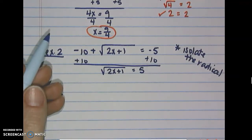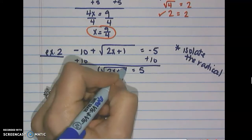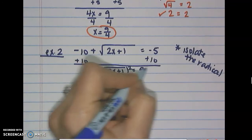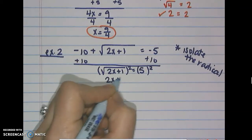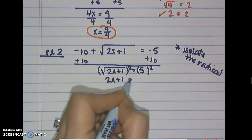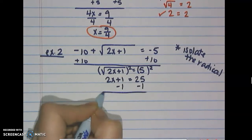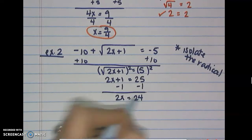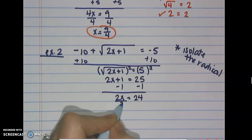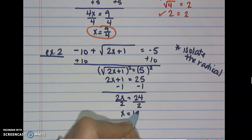This now looks almost exactly the same as the previous question. To get rid of the square root, we square both sides, giving us 2x plus 1 equals 25. Solving for x, we subtract 1 and divide by 2, so x equals 12.